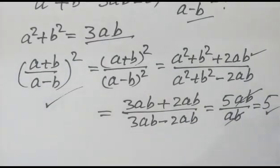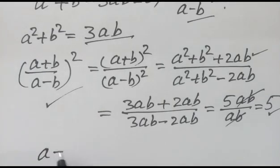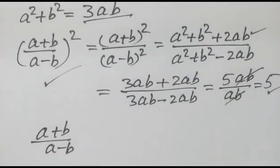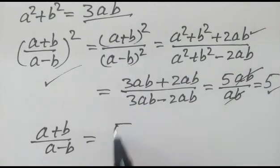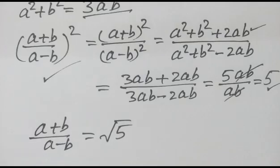This is equal to 5, so a plus b over a minus b will be equal to square root of 5. Okay friends, thank you.